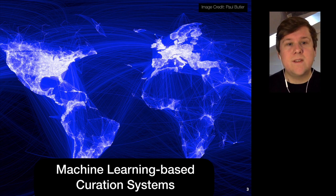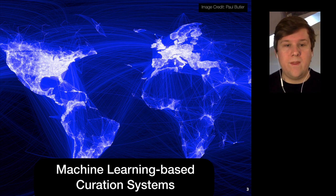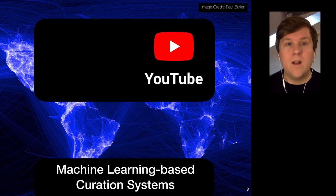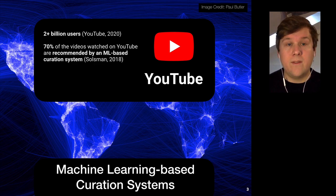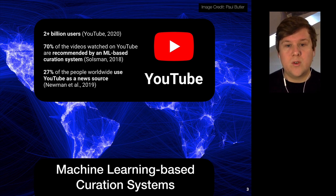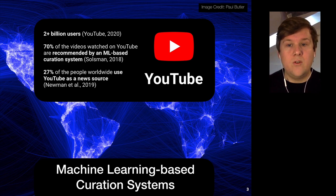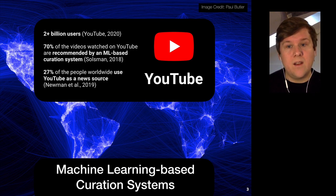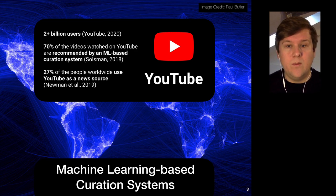Why would it be interesting to audit YouTube or other machine learning based curation systems? YouTube has more than 2 billion users per month and 70% of the videos watched on YouTube are recommended by a machine learning based curation system. This is remarkable because every fourth person worldwide relies on YouTube as a news source, and that percentage is even higher for younger people — every third 18 to 24 year old consumes their news on YouTube. This means YouTube's machine learning system plays an important role in what billions of people watch and how they see the world.